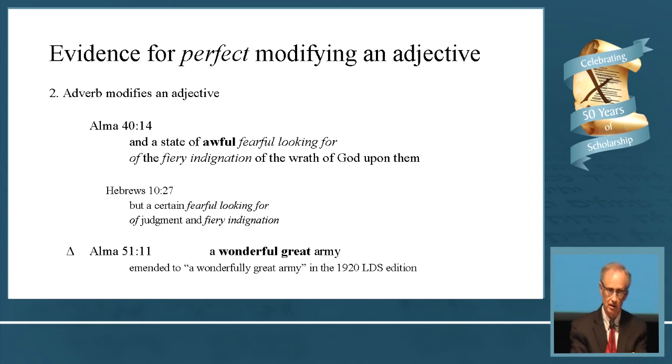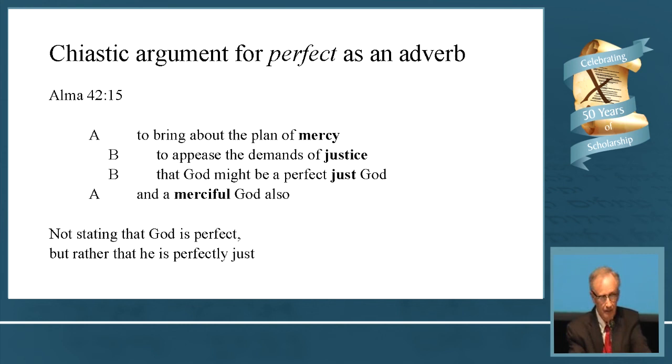Here's the chiastic argument. If you look at this passage chiastically, what you're really getting is nothing about perfection of God, but it's mercy on the outer parts and justice on the inner. To bring about the plan of mercy, to appease the demands of justice, that God might be a perfectly just God, completely just, and a merciful God also. There's nothing in here really about God being perfect. We know it's true, but the emphasis is on it being perfectly just. A chiastic argument here would say the perfect doesn't really belong there and will interpret it as an adverb.